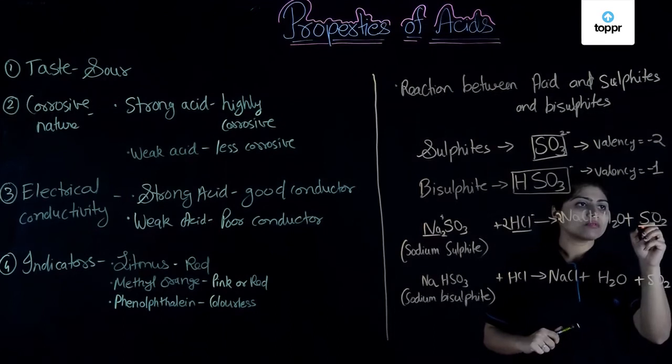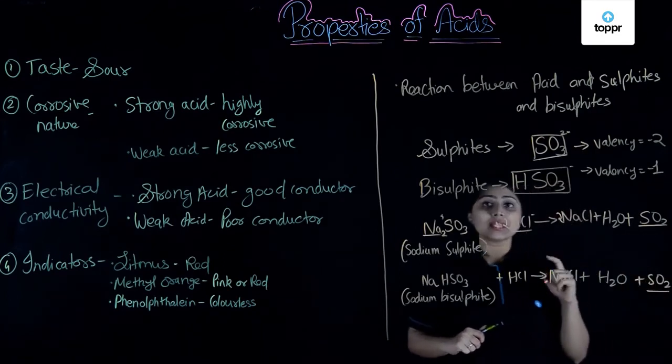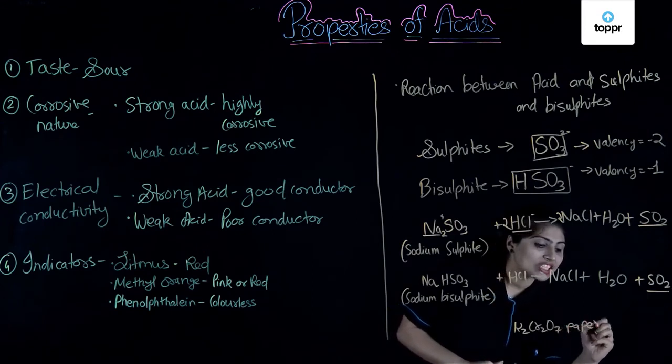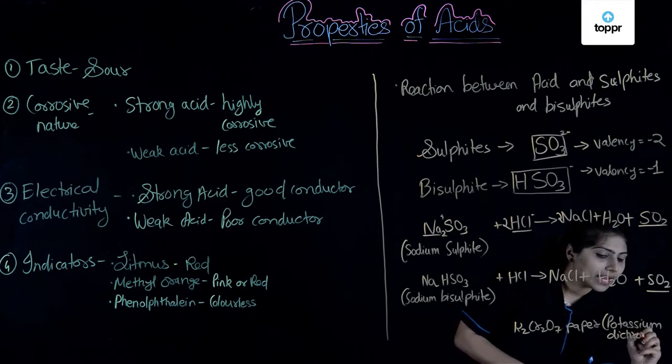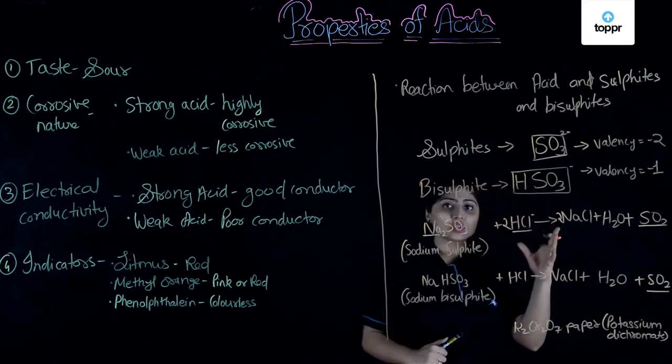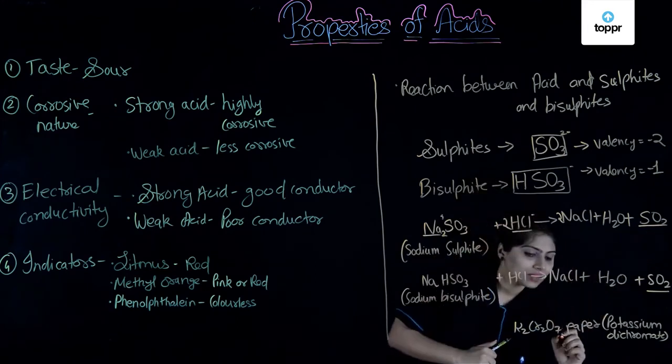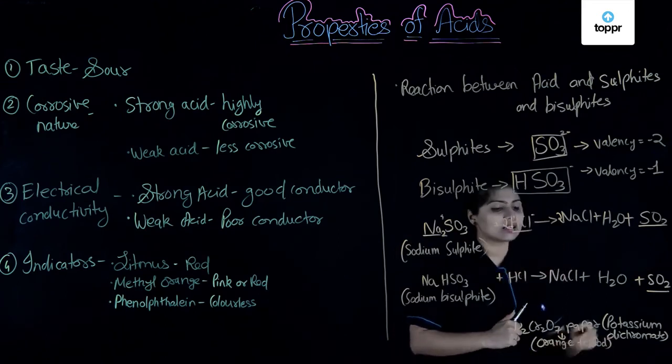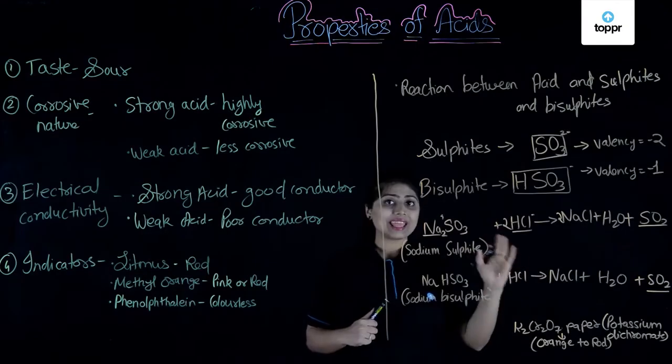Now, in this reaction this sulphur dioxide gas which is formed can be tested. How do we test this gas? We test it by using a paper called K2Cr2O7 paper which is nothing but potassium dichromate paper. This paper is specially used for testing sulphur dioxide gas. If in a reaction a gas is evolved and we have a doubt it might be sulphur dioxide we can use this paper. Once this paper comes in contact with SO2 it will change its colour from orange to red. It is initially orange in colour and then will change to red once SO2 comes in contact with it. These are some reactions that we need to study regarding acid HCl.